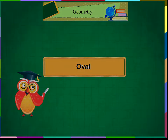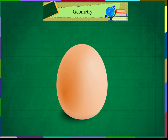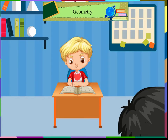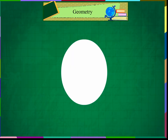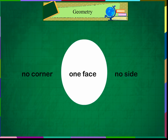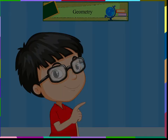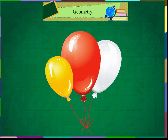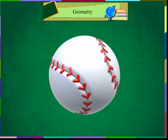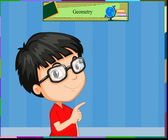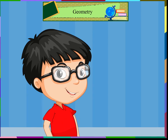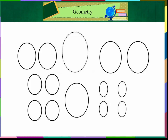Oval. What is the shape of this egg? This is oval in shape. I love eggs. Eggs give us protein. An oval also has no corner and no side. It has only one face. Some examples of oval shapes are watermelon, balloons, tomatoes, and baseballs. Oval shapes can be of different sizes, as shown on the screen.